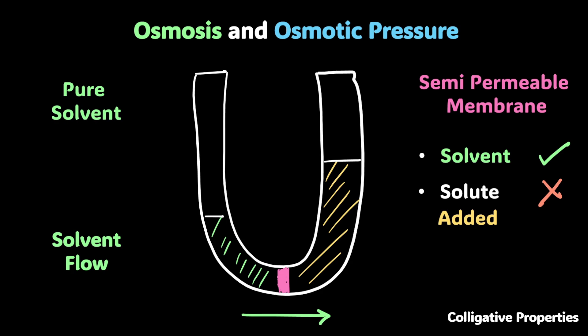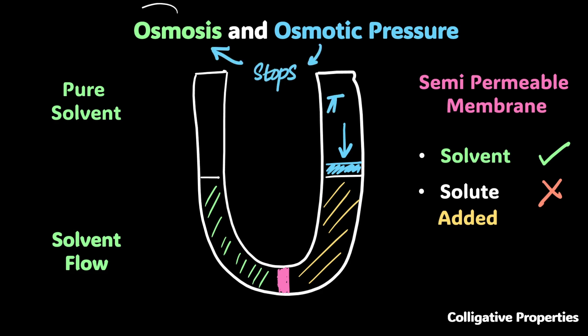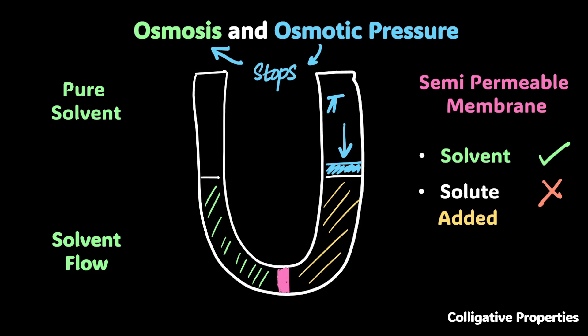You want to stop this process. So let's apply a pressure on the solution side where the liquid level is high. We keep pushing until the levels become equal again, and there is no more solvent flow. The pressure that we apply — let's call it pi — that just stops osmosis is known as osmotic pressure. Osmosis was flow from the solvent side to the solution side, and osmotic pressure is what stops osmosis.